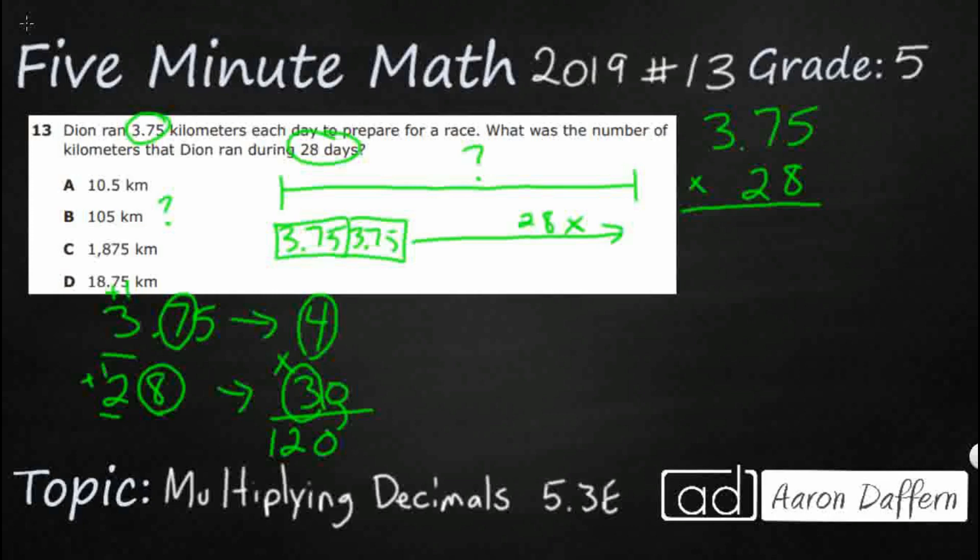But 10.5, I'm not even sure where this is coming from, because that's not going to work, because that's even smaller. This 18.75 is smaller than my 28. So I'm thinking between B and C, but most likely B.